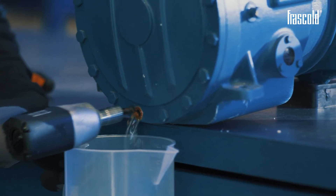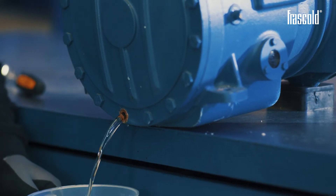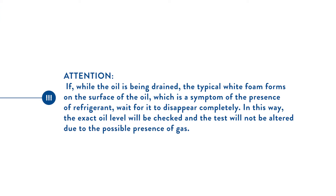Remove the oil drain screw with a screwdriver or ratchet and drain the oil into one or more clean jugs. Attention! If, while the oil is being drained, the typical white foam forms on the surface of the oil — which is a symptom of the presence of refrigerant — wait for it to disappear completely. In this way, the exact oil level will be checked and the test will not be altered due to the possible presence of gas.